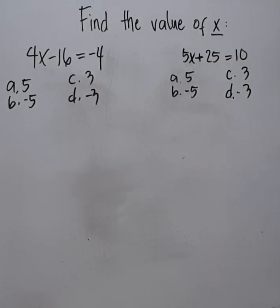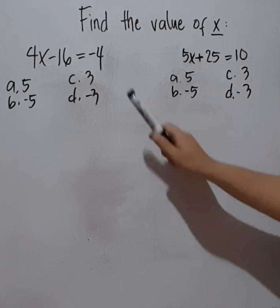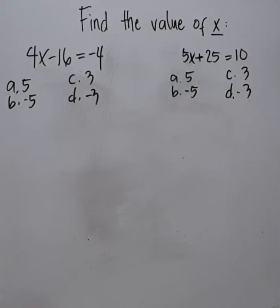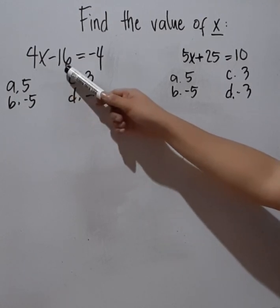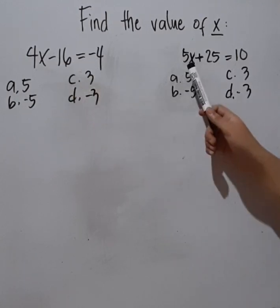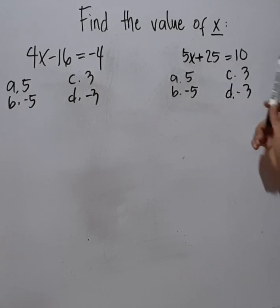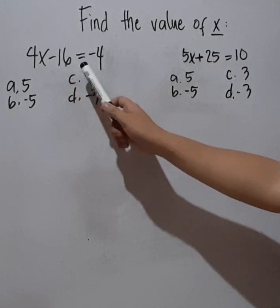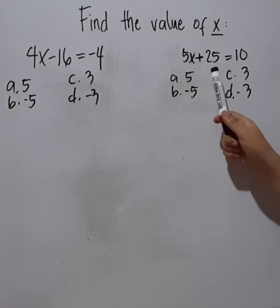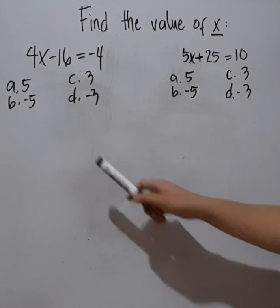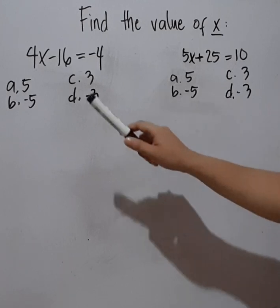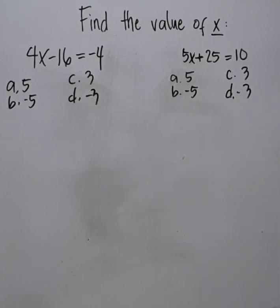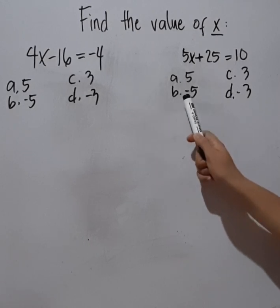So how to find the value of x? We have here two examples. We have 4x - 16 = -4 and 5x + 25 = 10. This side is more negative and this one is more positive. We have here the choices as you can see from A to D. The choices are the same, and it matters on the positive and negative side.